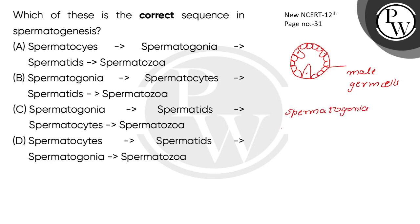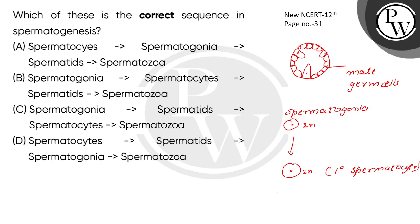In spermatogenesis, after the multiplication phase there is a growth phase. After the growth phase, the spermatogonia become the primary spermatocyte. We note the ploidy at each stage of spermatogenesis.